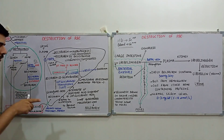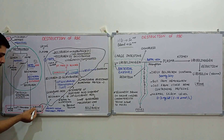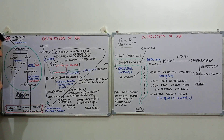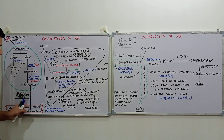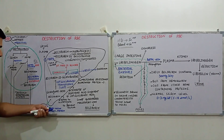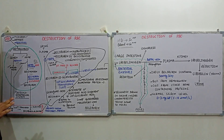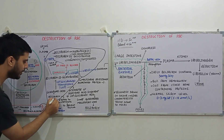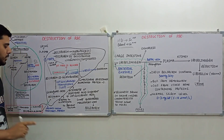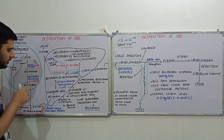Bilirubin cannot travel through the blood on its own, so it attaches to the protein albumin, forming the bilirubin-albumin complex. This complex travels to the liver. Before entering the liver, the albumin is released back into the blood circulation, and bilirubin enters into the hepatocytes via an important protein called the organic anion transport protein.